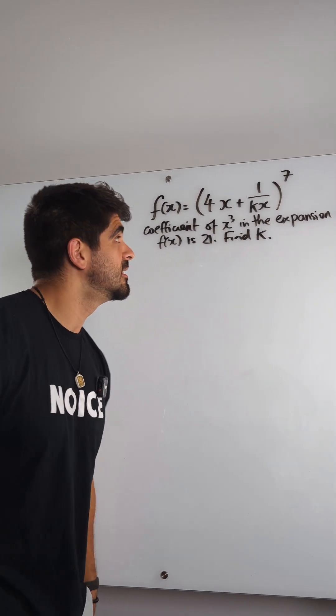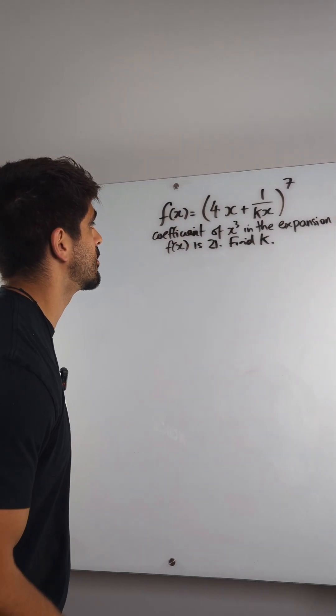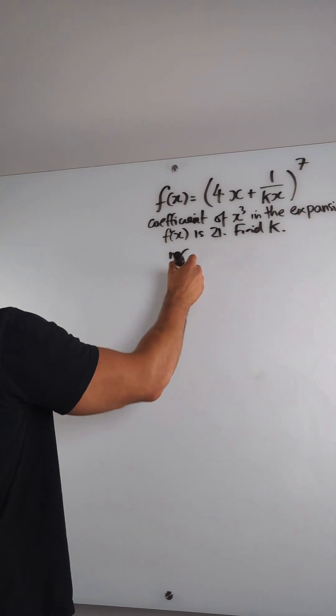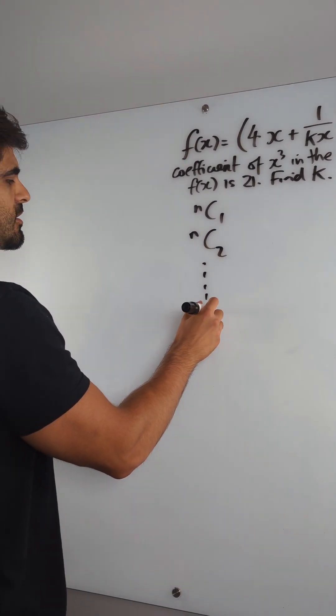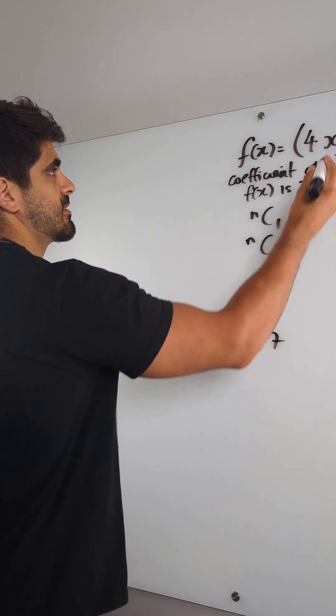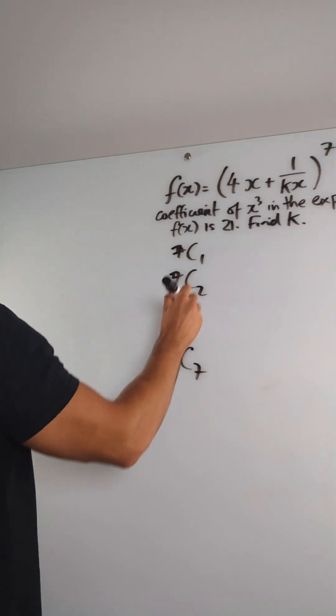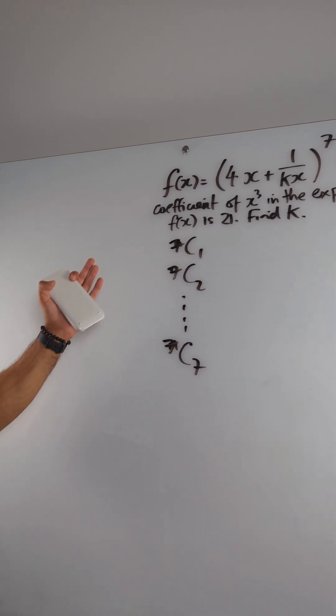Now if you want, you can go and do your n choose 0, n choose 1 for every single coefficient, all the way down to n choose 7, and in this case n is 7. But you don't want to have to do all of them, that's just long.